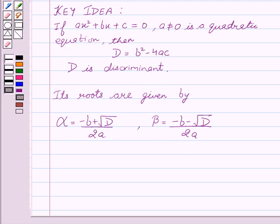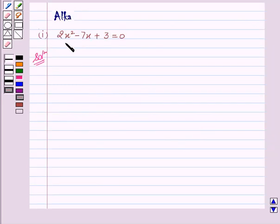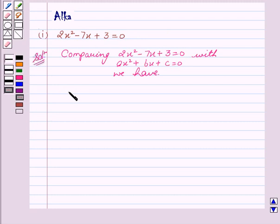Let's start with the solution. On comparing 2x square minus 7x plus 3 equal to 0 with ax square plus bx plus c equal to 0, we have a equal to 2, b equal to minus 7, and c equal to 3.